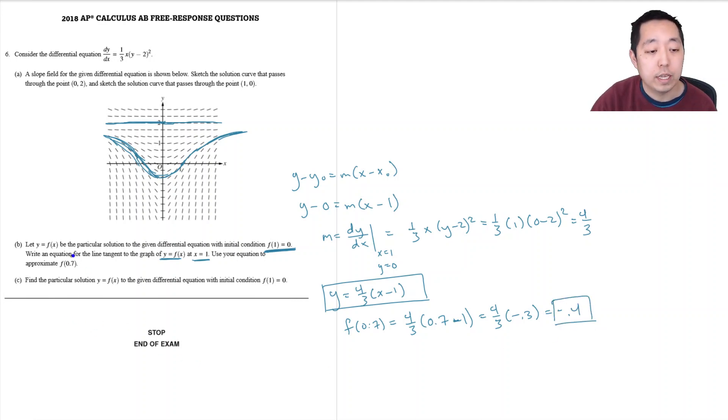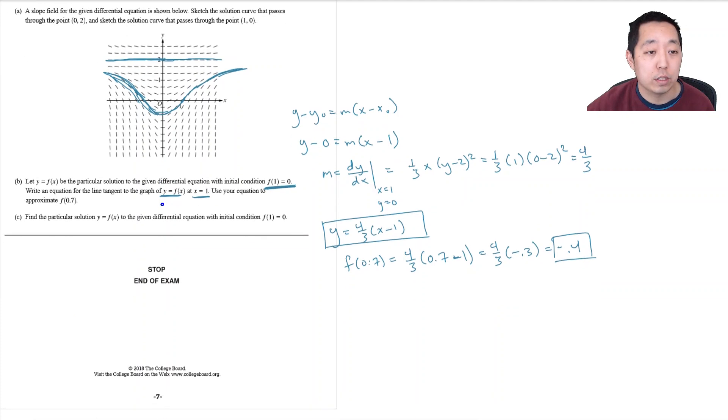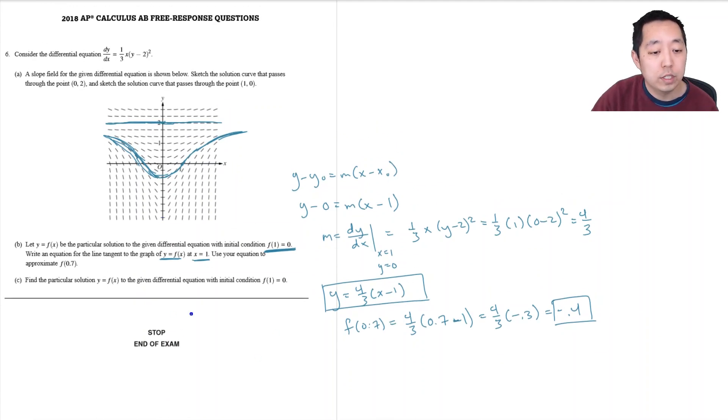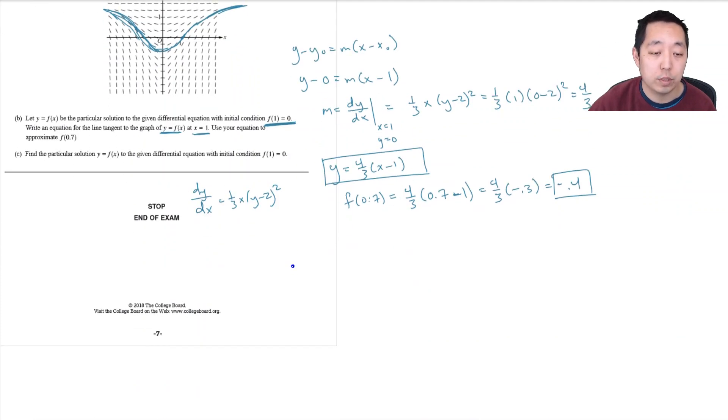And now let's find the particular solution to this differential equation. So to find the particular solution I have to rearrange this. I have dy dx is equal to one third x times y minus two squared. The only technique you know for differential equations at this point is separation of variables. So I bring the dx up here and I bring everything with the y down here. So I have dy over y minus two squared is equal to one third x dx.